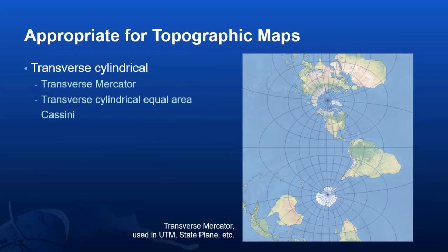For the largest scale maps, such as topographic maps, historically people have used transverse cylindrical projections like Transverse Mercator, transverse cylindrical equal area, or the Cassini projection. Transverse Mercator has been used for UTM — Universal Transverse Mercator zones — state plane zones, and Gauss-Krüger zones.